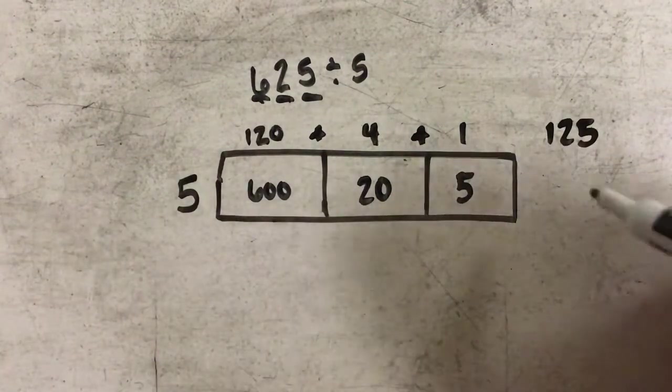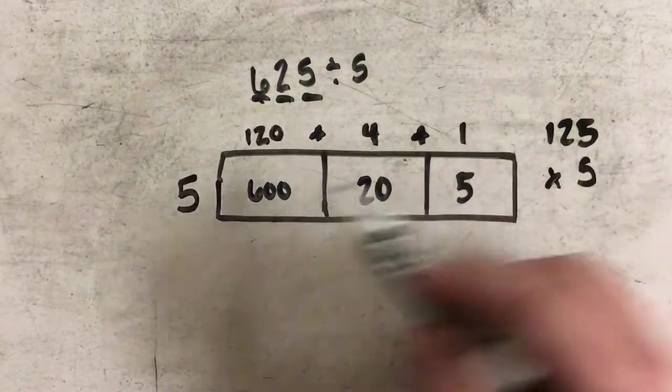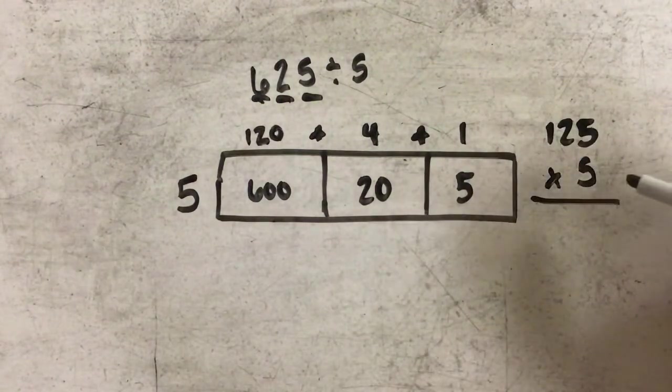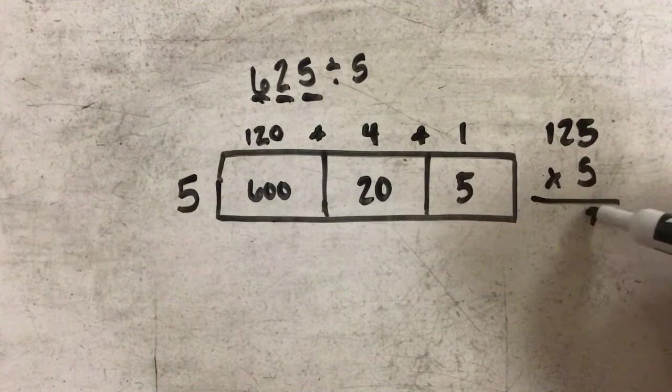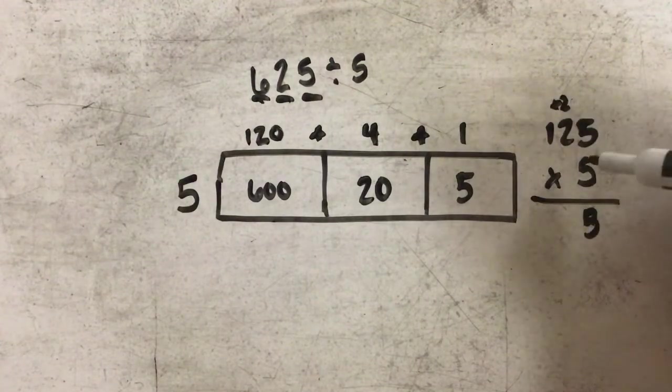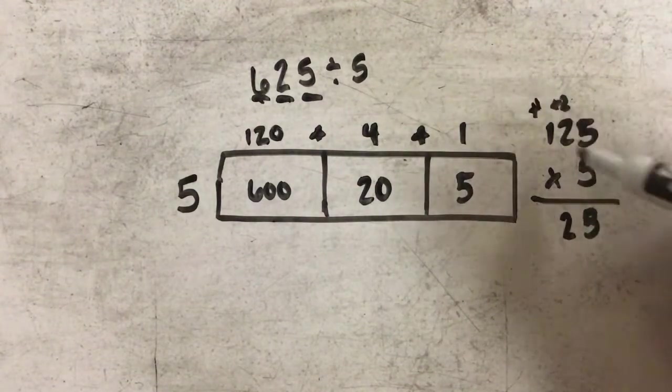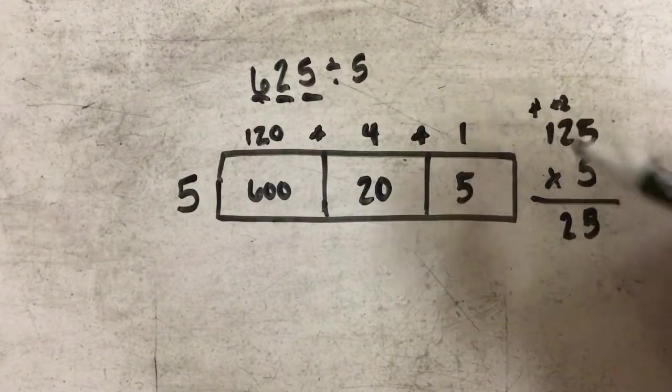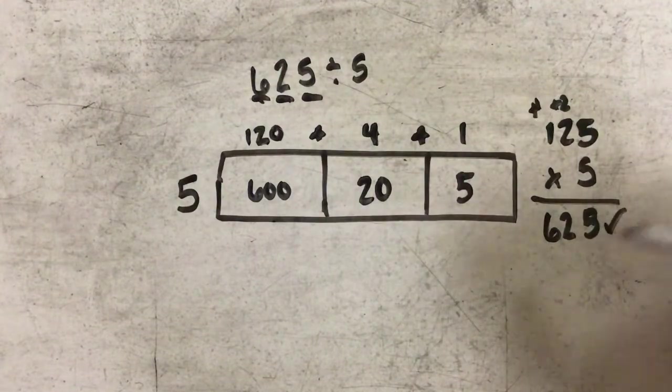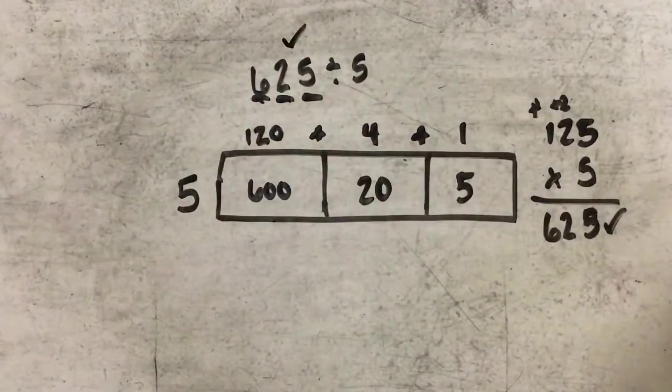I can always check my work by multiplying by the number that I was originally dividing by. 5 times 5 is 25. 5 times 2 is 10 plus 2 is 12. 5 times 1 is 5 plus 1 is 6. And the number that I get here should equal the original number that I divided by.